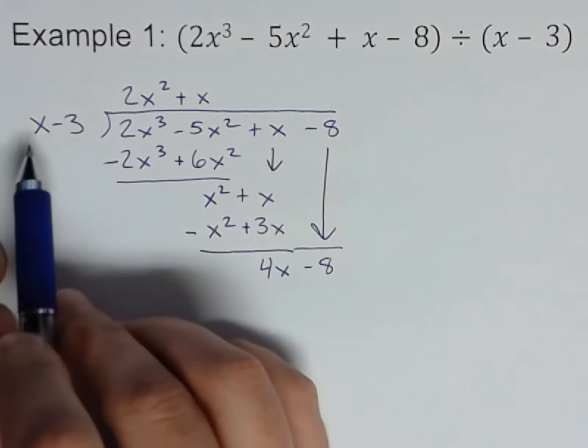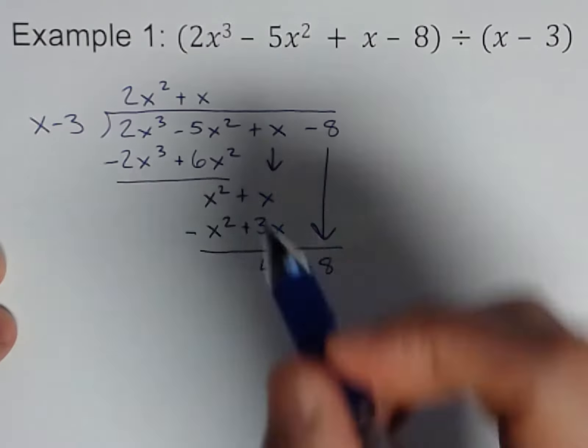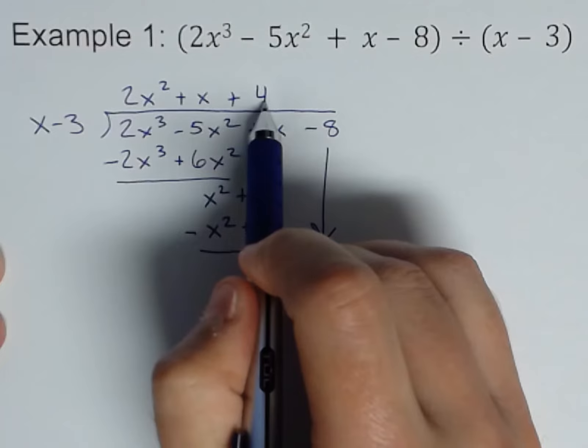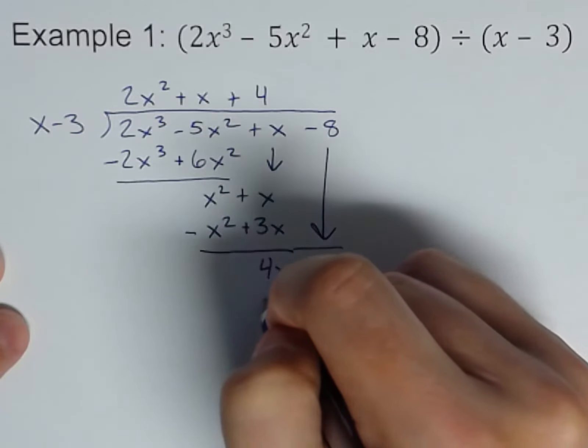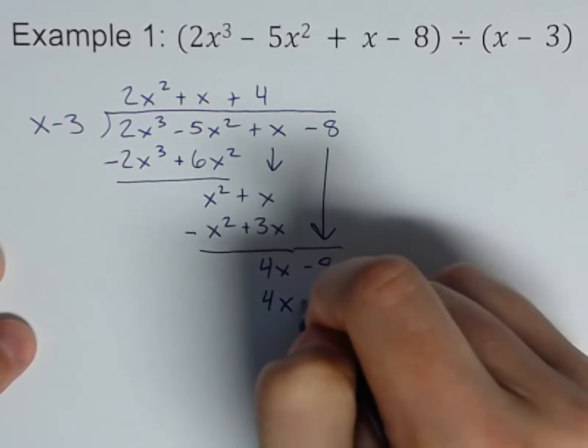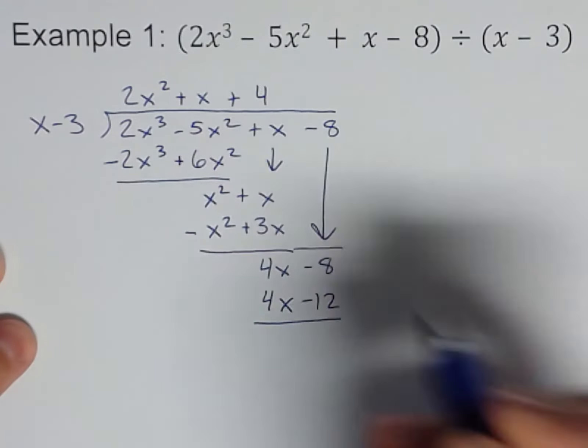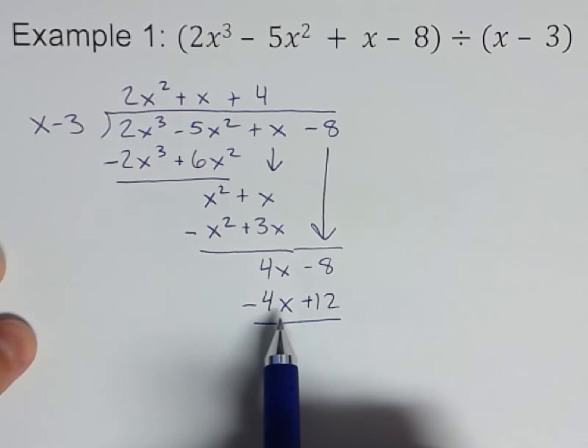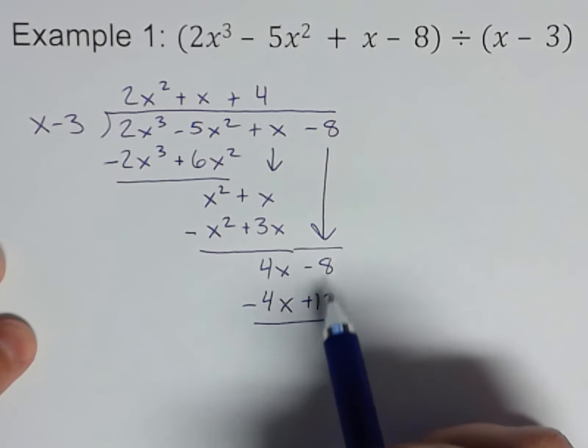And let's keep going. x into 4x? Well, that'll go 4 times. x times what is 4x? Well, it's 4. So plus 4, and then multiply it through. 4 times x is 4x. 4 times -3 is -12.